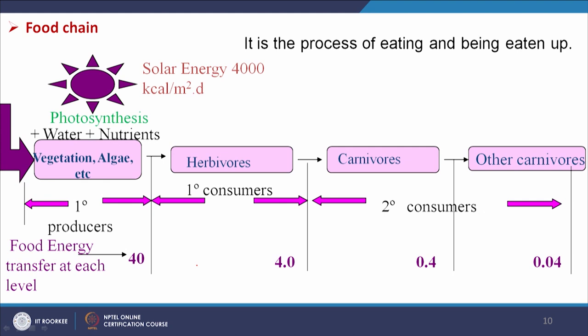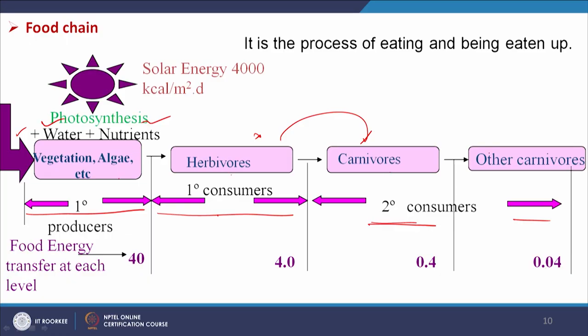Water, nutrients, CO₂, and sunlight give us food and energy stored in food. That food energy is transferred at each level: producer level, then first-degree consumers (herbivores), second-degree consumers (carnivores). If food energy transferred at one level is 40, the next level gets 4, then 0.4, then 0.04. So from one trophic level to the next, energy availability is reduced 10 times. Energy flow will be like a pyramid. Omnivores can take both carnivores and herbivores.